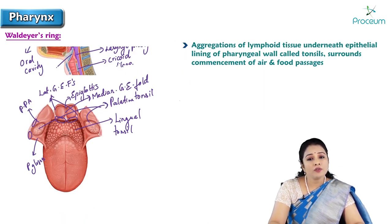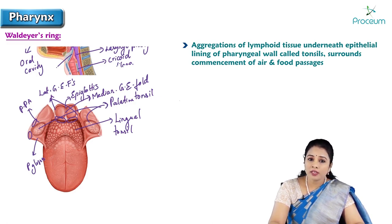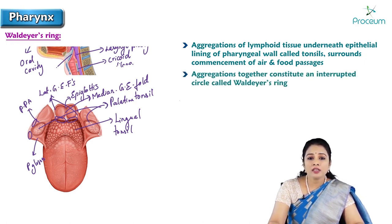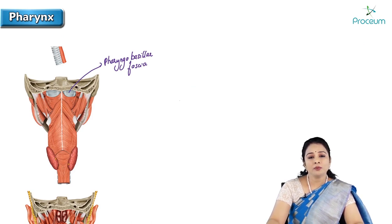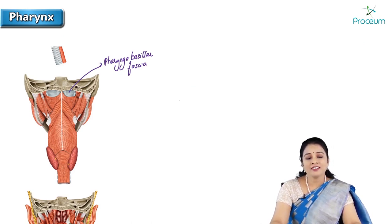Waldeyer's ring: the aggregations of lymphoid tissue underneath the epithelial lining of the pharyngeal walls, called tonsils, surround the commencement of air and food passages. These aggregations together constitute an uninterrupted circle called Waldeyer's ring, which forms a special feature of the interior of the pharynx.